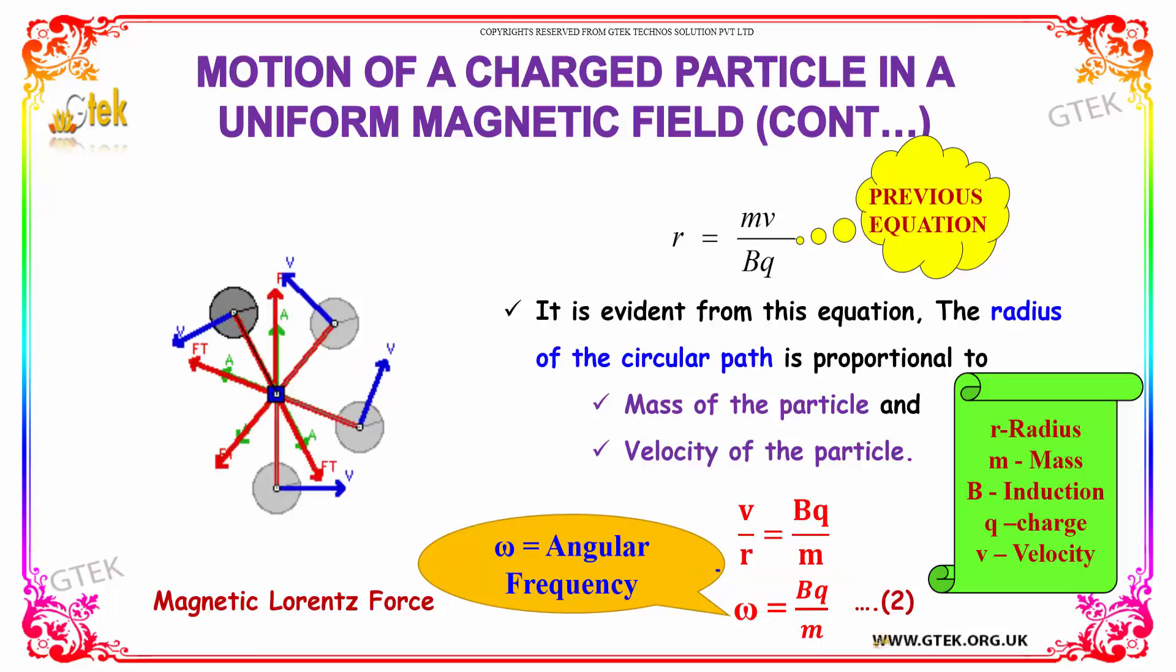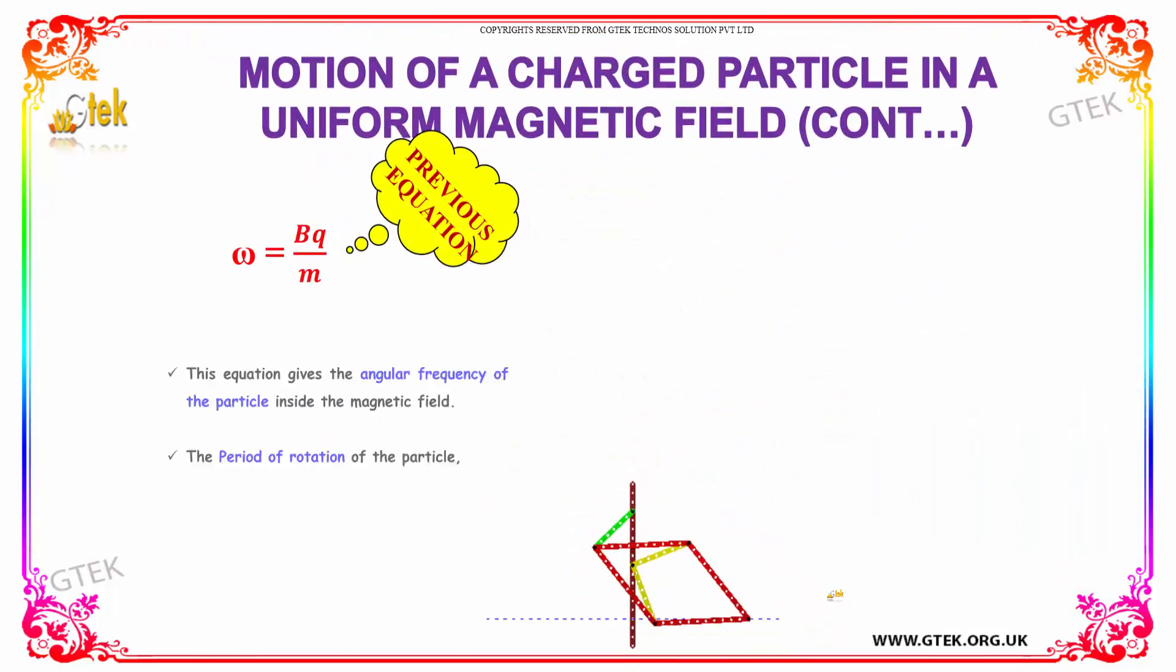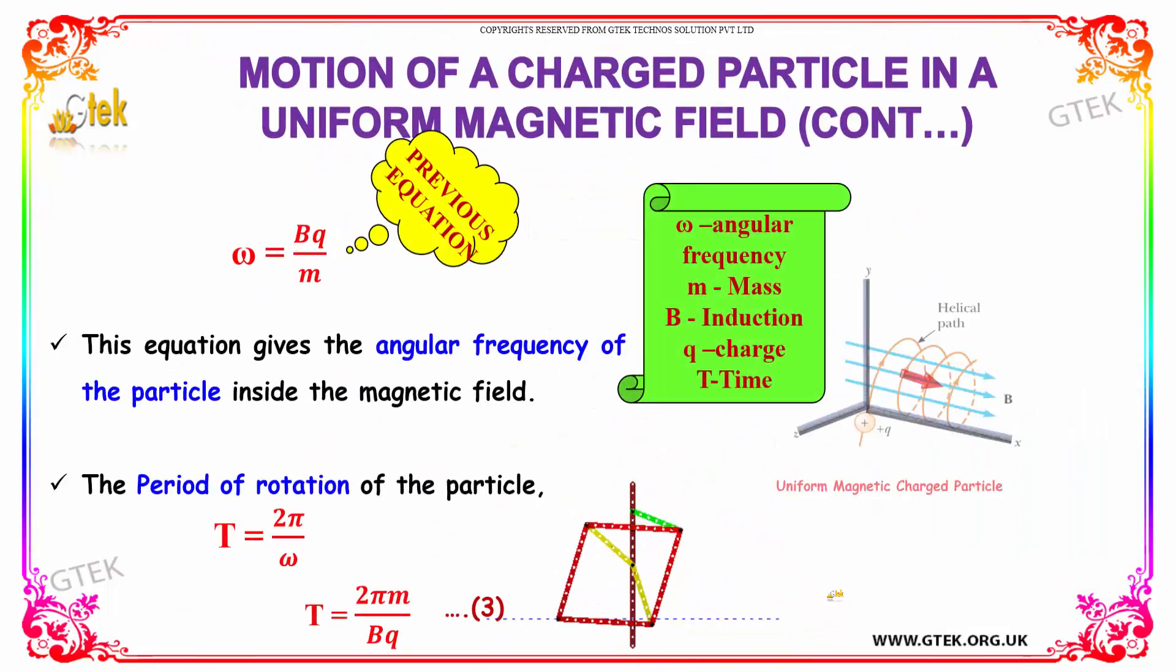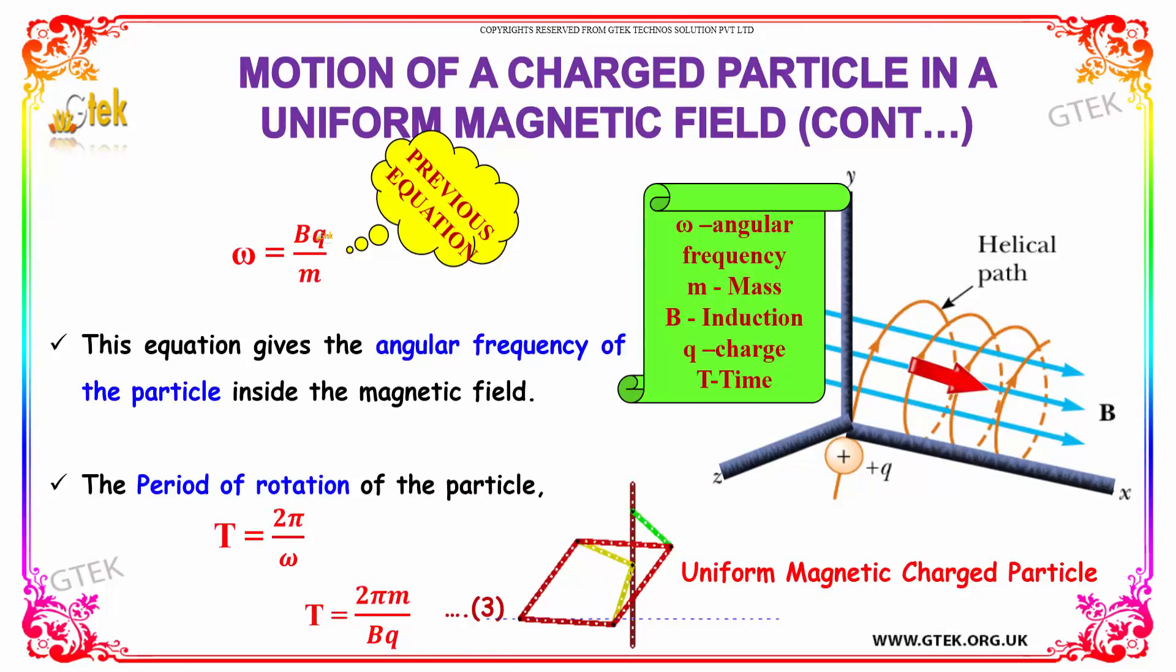So omega, that's your angular velocity, omega equals BQ divided by M. That's your magnetic Lorentz force. So omega equals BQ divided by M, which is the angular frequency of the particle inside the magnetic field.